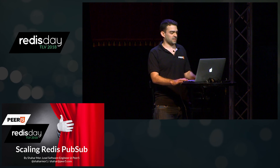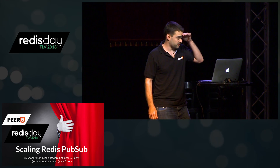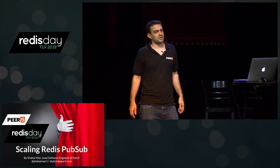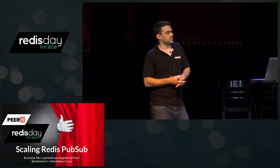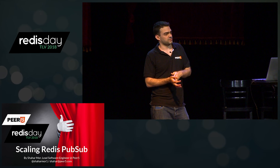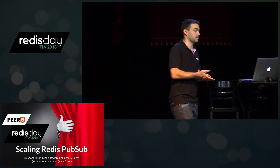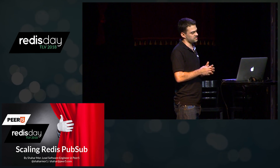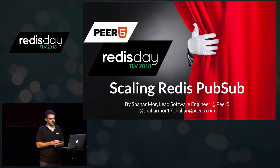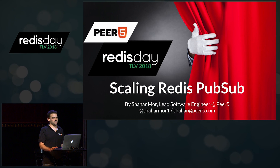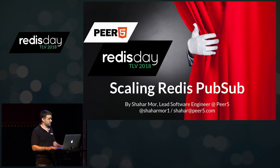Before I begin, let me introduce myself. As Itamar said, my name is Shachar Mohr. I've been a developer for the past ten years, messing with Redis for about six years, and currently I work as a lead software engineer — which is a nice name for a developer — at Peer 5.